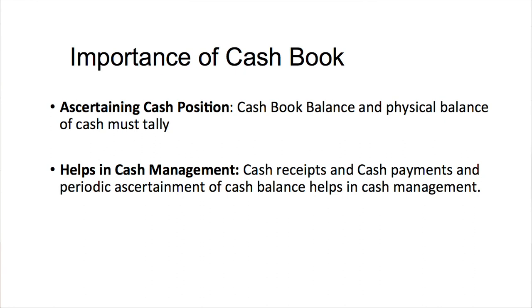Cashbook also helps in proper cash management. The sources from where you are receiving cash and for what you are making payments will all be recorded in the cashbook. In cashbook there will be two sides — debit and credit — one is the receiving aspect and the other is the paying aspect, which we will discuss in detail in the practical session. All receipts and payments will be recorded, and you will be able to know the exact amount of cash, what you are paying for, and from where you are receiving the cash.